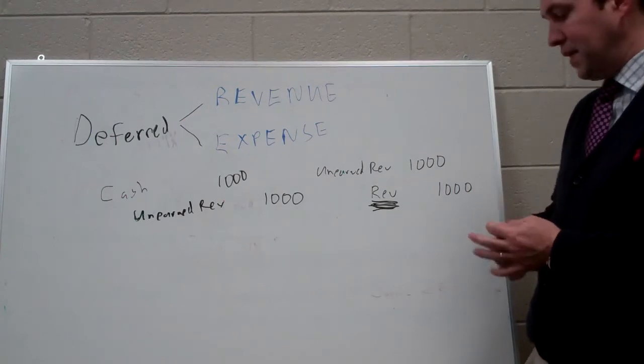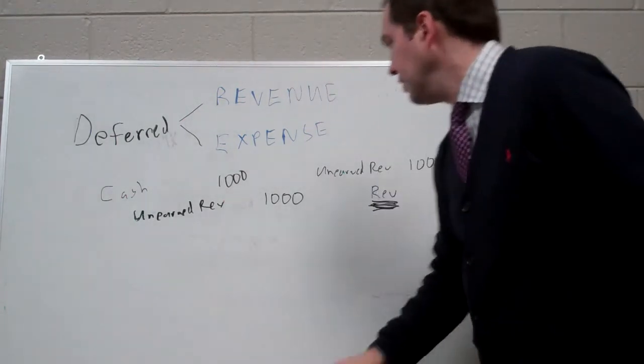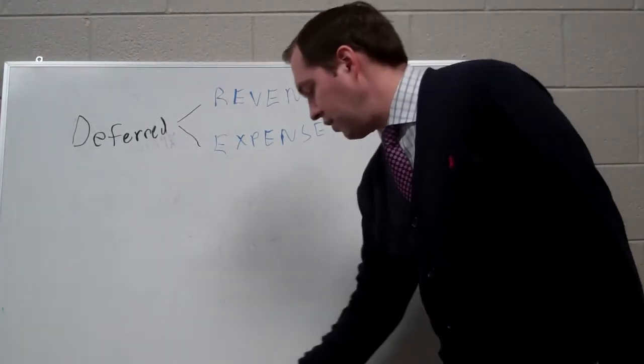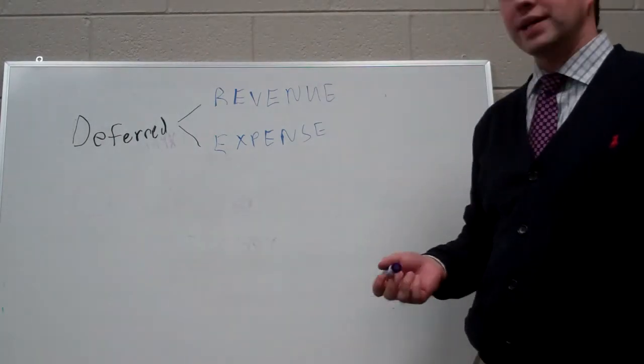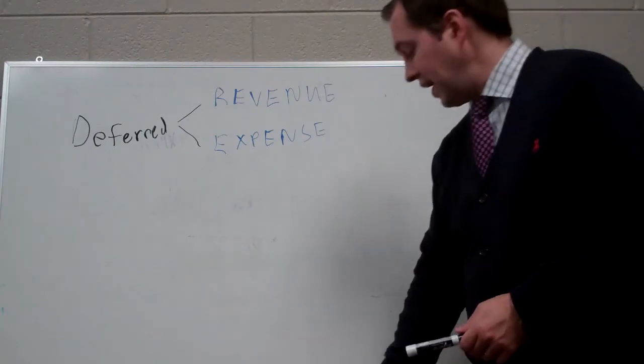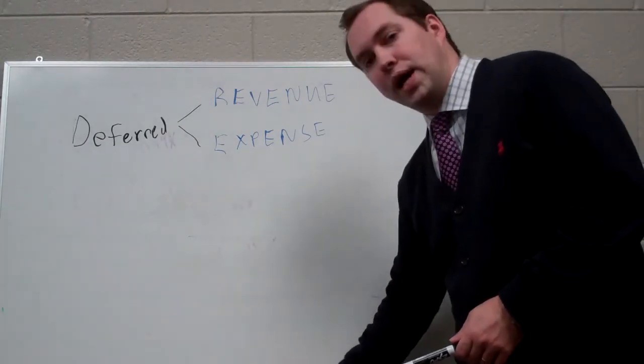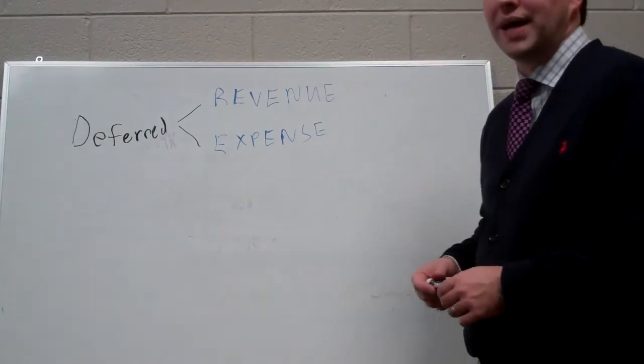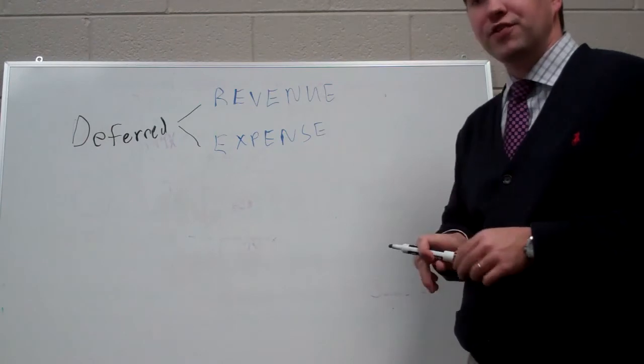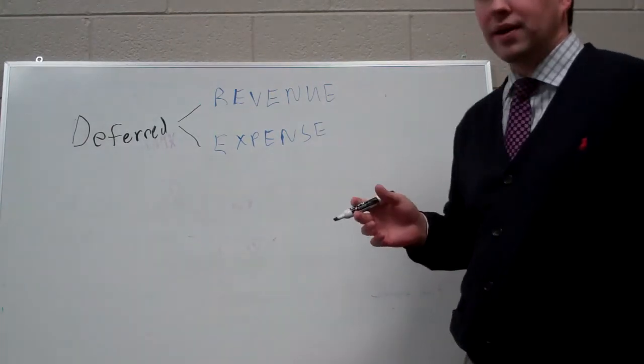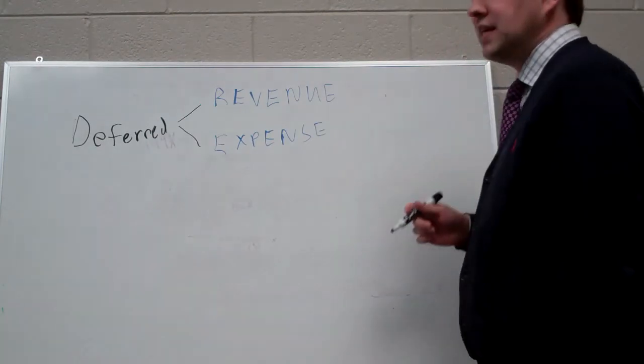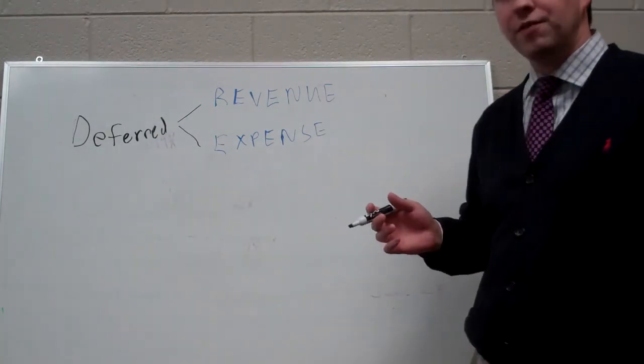Deferred expenses are the same idea. Deferred expenses are where we have cash out now, but we have to defer recognition of an expense. And a good example of that is when we buy supplies. When we buy, let's say, office supplies, things like pens or post-it notes. Well, we know that office supplies require cash and they're an asset. But we can't expense them until we've used them.